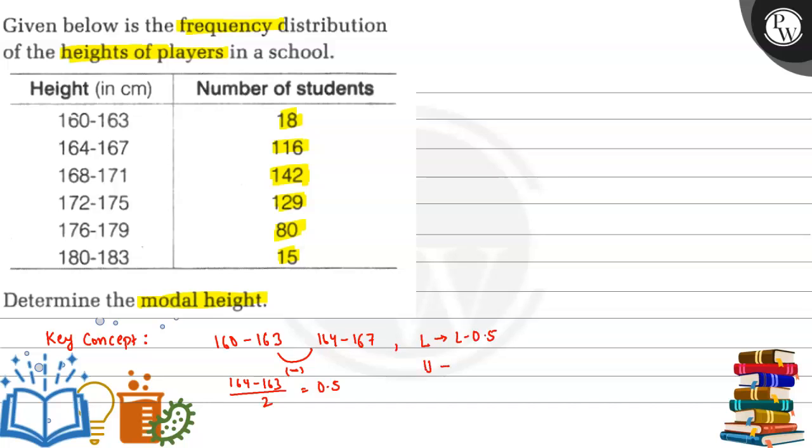Then we have to find the modal height, that is mode. Mode is the value of observation that occurs most often, and the modal class is such class whose frequency is maximum.